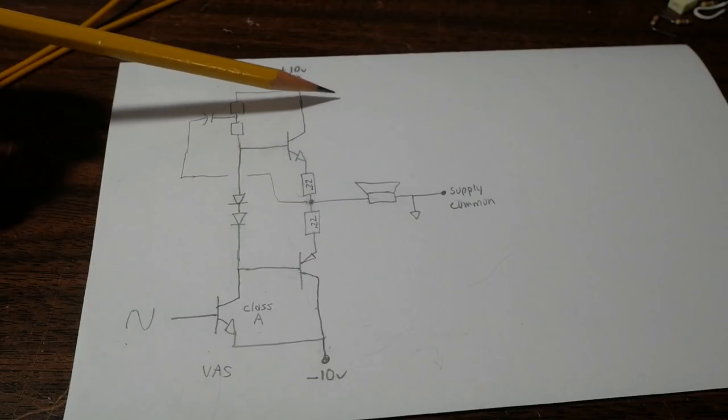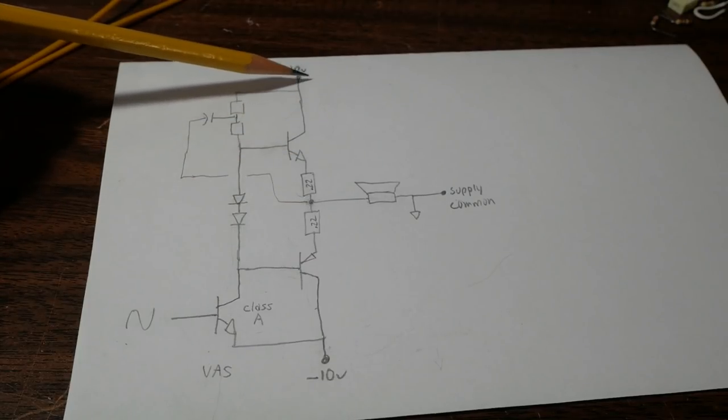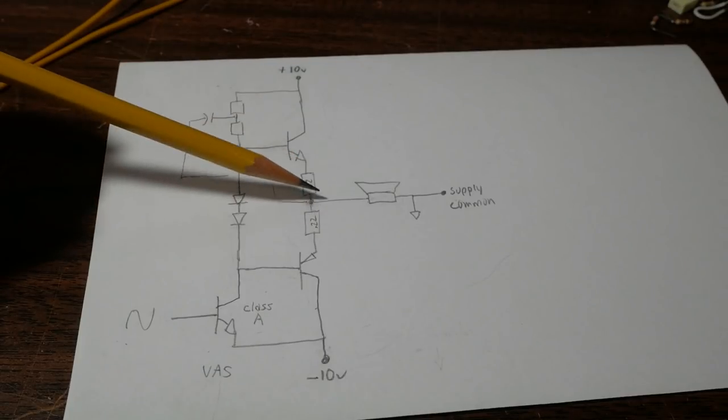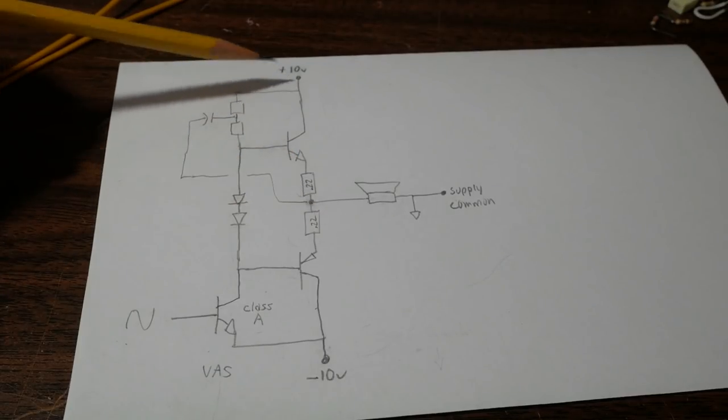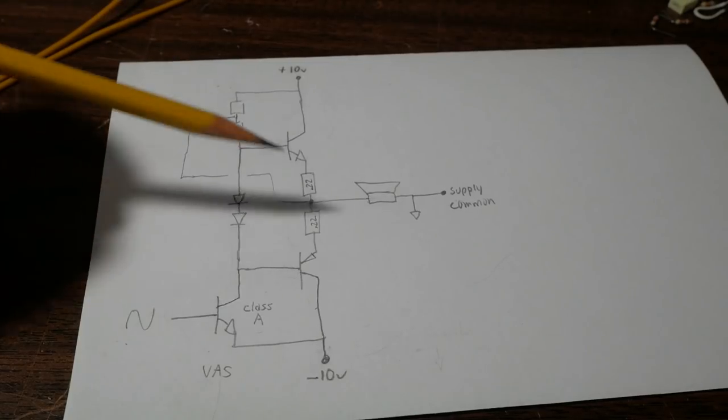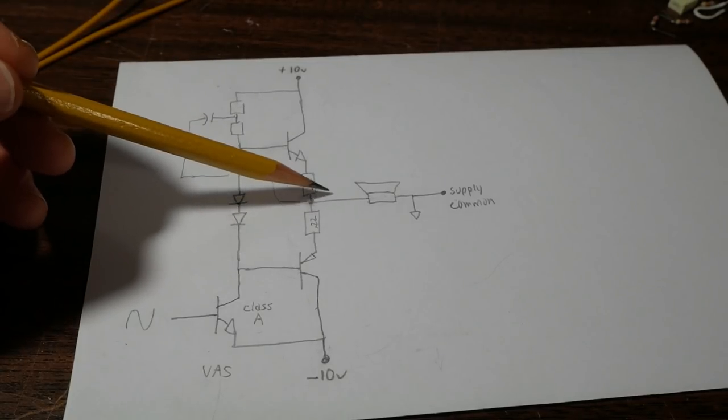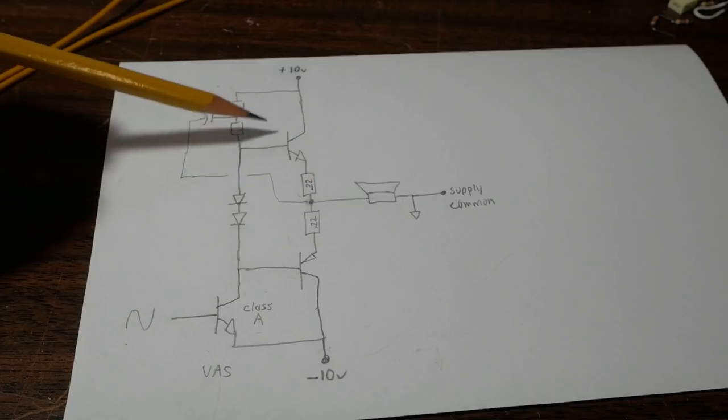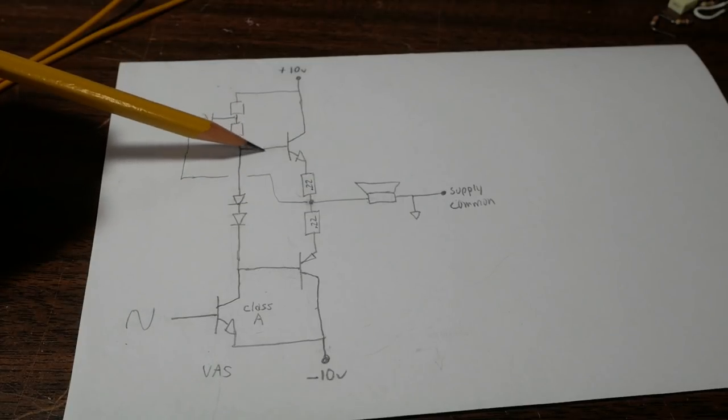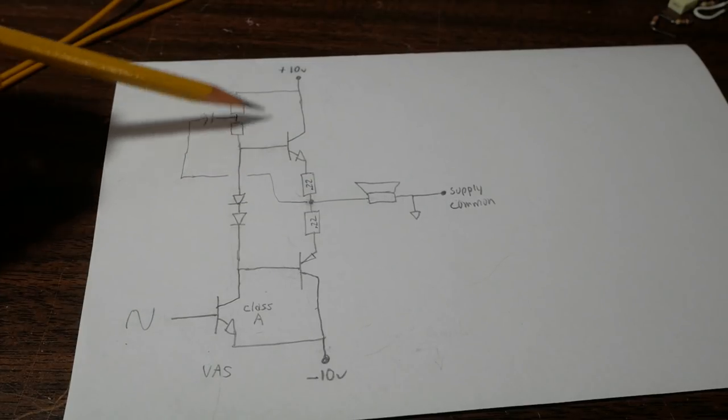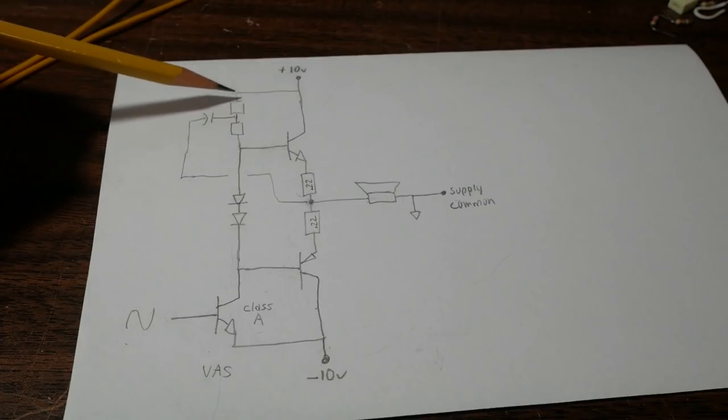So what happens now when the output is close to the supply voltage? Well, we'll just, to keep it simple, we'll just say that the output is at the supply voltage. Like I said, in the real world that can happen. So now you have 10 volts here. And if you have 10 volts on the base, then you have nothing here, the current can't flow. However we added this bootstrap circuit.